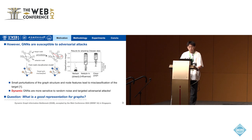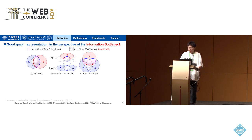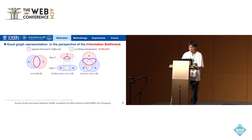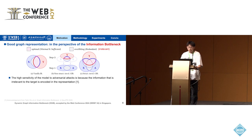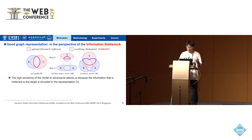So our question is: what is a good representation for graphs? Past works answer this question from the perspective of information bottleneck theory, which can be categorized into three types depending on whether graph structures are directly involved in the representation optimization process: the vanilla information bottleneck, the non-structure-involved graph information bottleneck, and the structure-directly-involved graph information bottleneck. Analysis of existing work indicates that GNNs are highly sensitive to adversarial attacks because information not relevant to the task objective is encoded into the latent representation. Therefore, using the information bottleneck as the optimization goal to constrain GNN learning can make graph representations contain minimal and sufficient information, leading to good prediction.